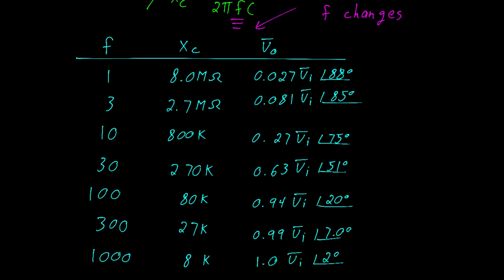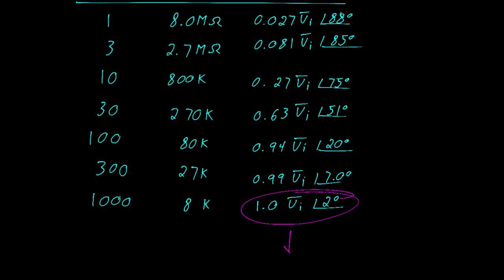At this point the pattern for this high-pass filter should be pretty clear. For any frequency higher than 1,000 hertz, we can simply say that the output voltage is the same as the input voltage.